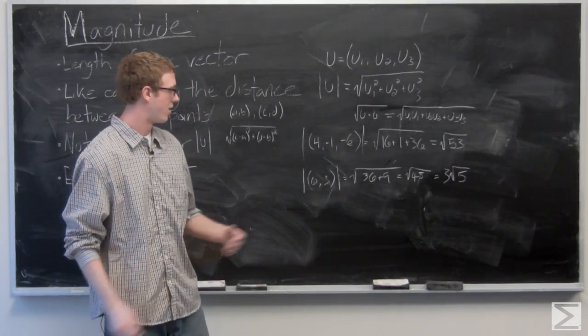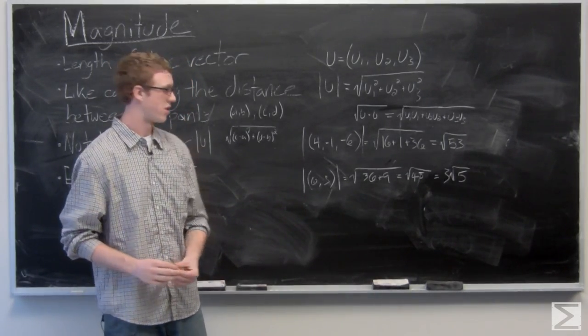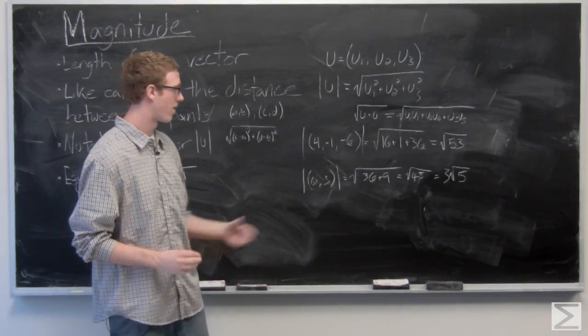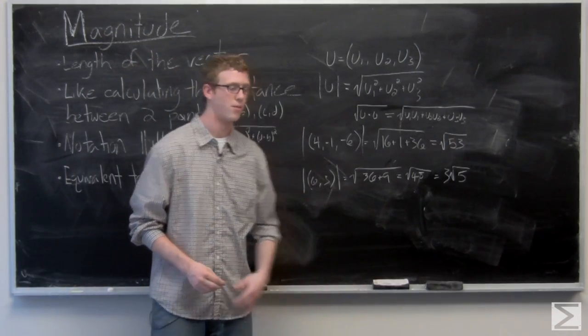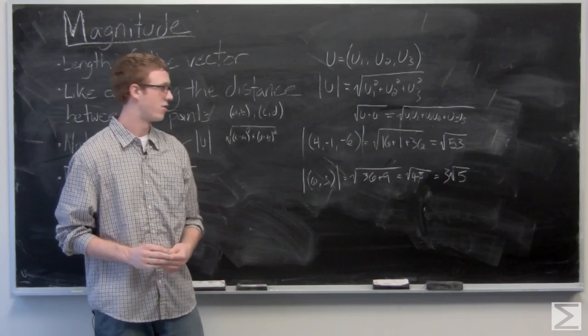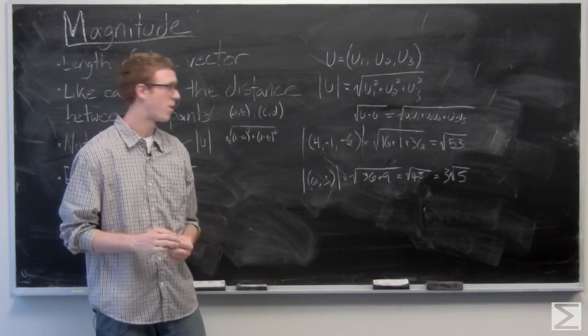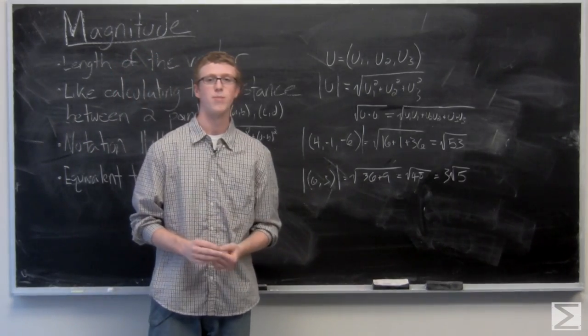On one last note, notice that your magnitude is always going to be positive because you're squaring values and then taking the square root of them. But added together values that are squared are always going to be positive. So your magnitude will always be positive.